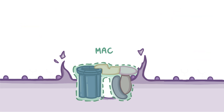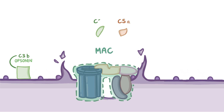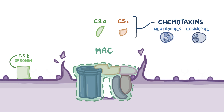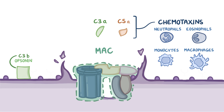The various complement fragments contribute to these pathways but also play other additional roles. For example, C3b serves as an opsonin, which means that it helps immune cells phagocytize debris. C5a and C3a also act as chemotaxins, which recruit neutrophils, eosinophils, monocytes, and macrophages to the site of inflammation.